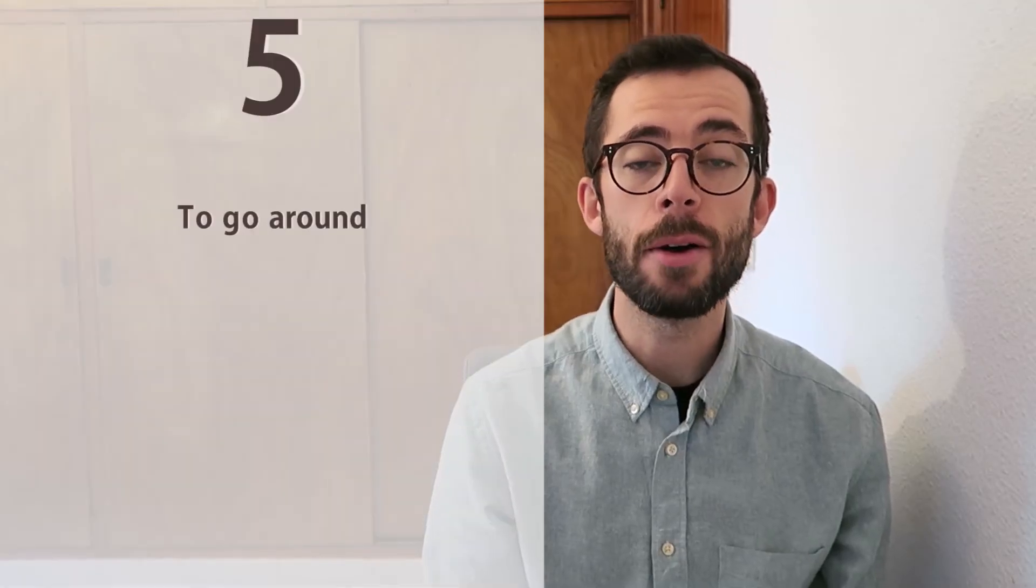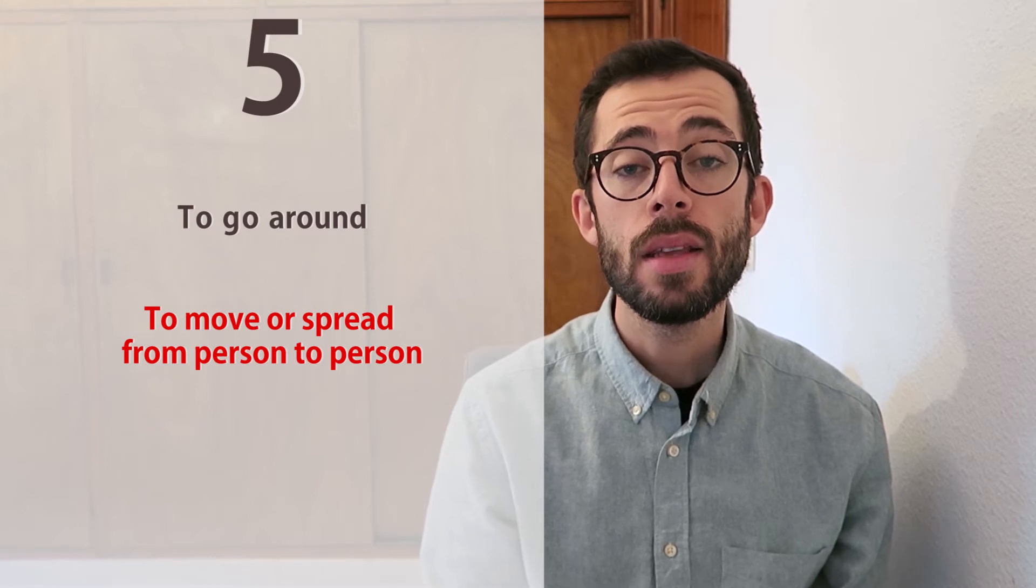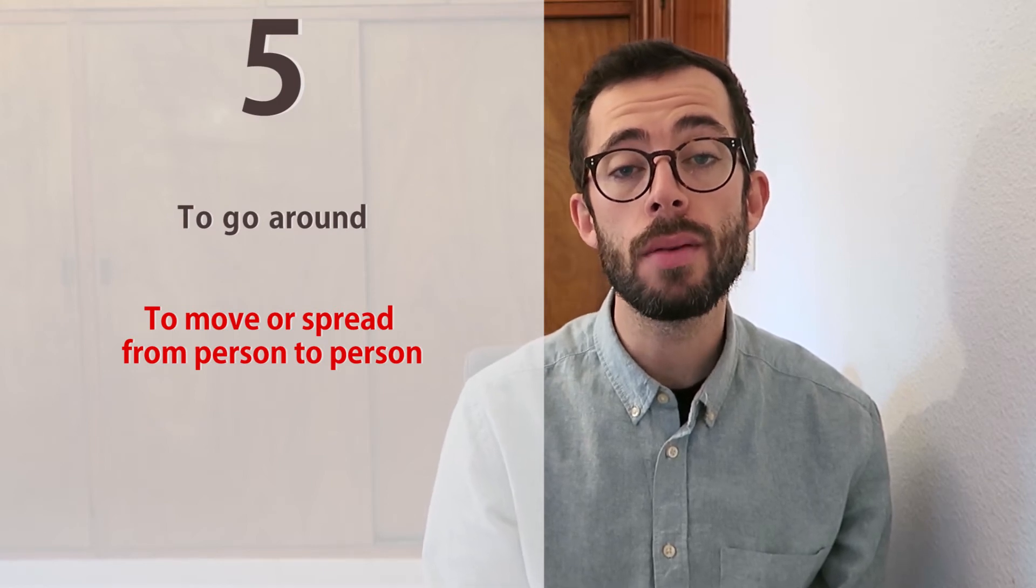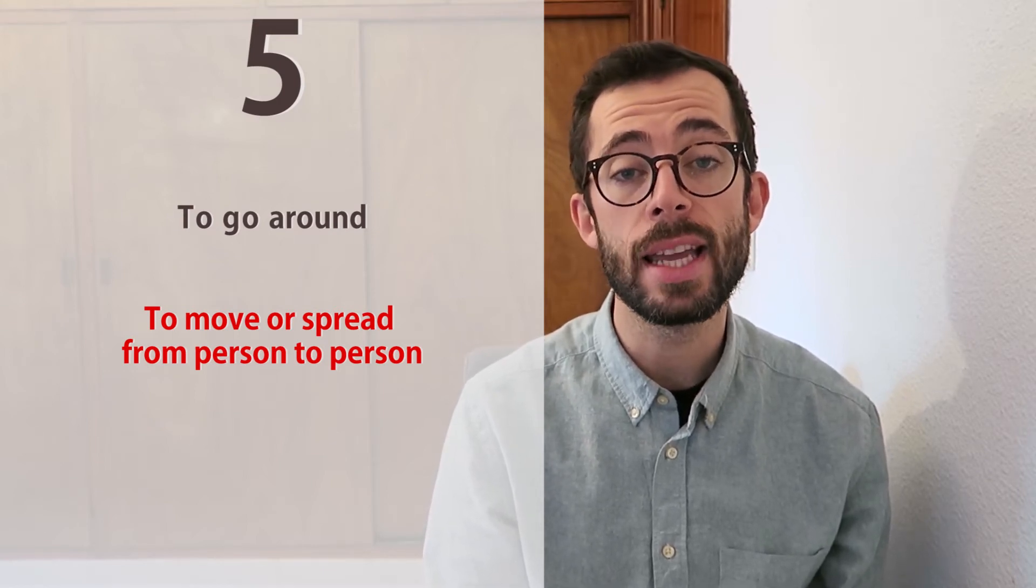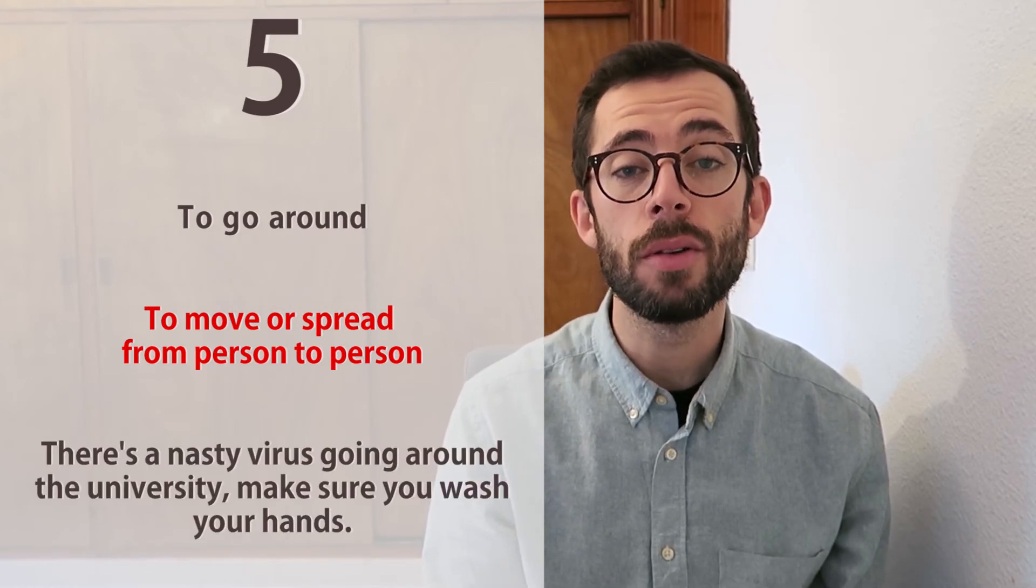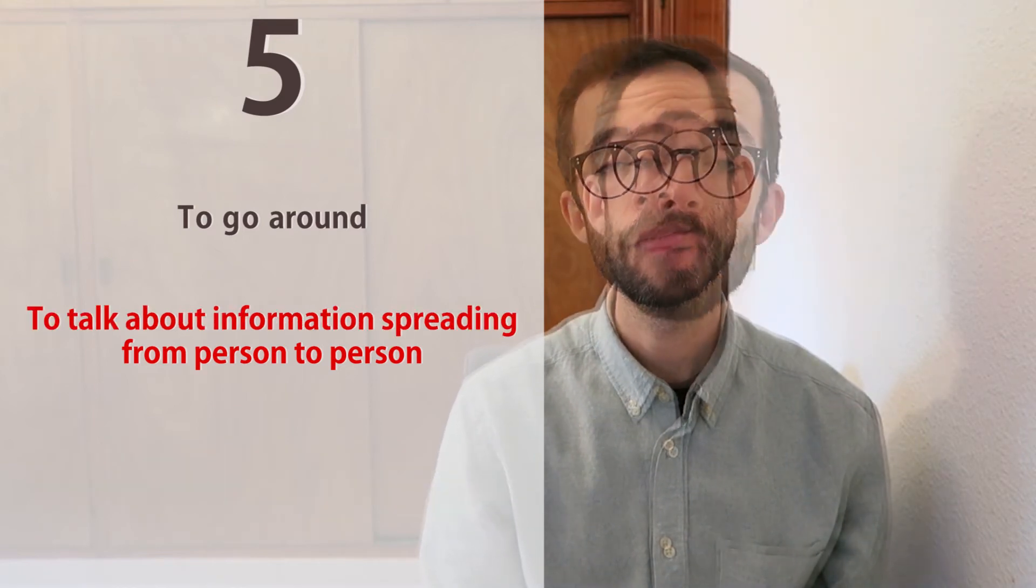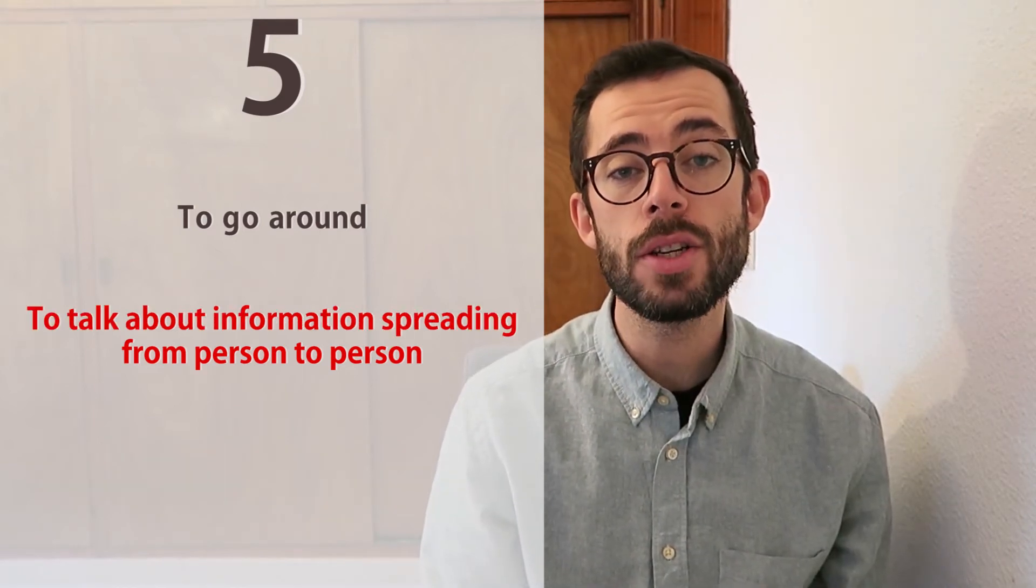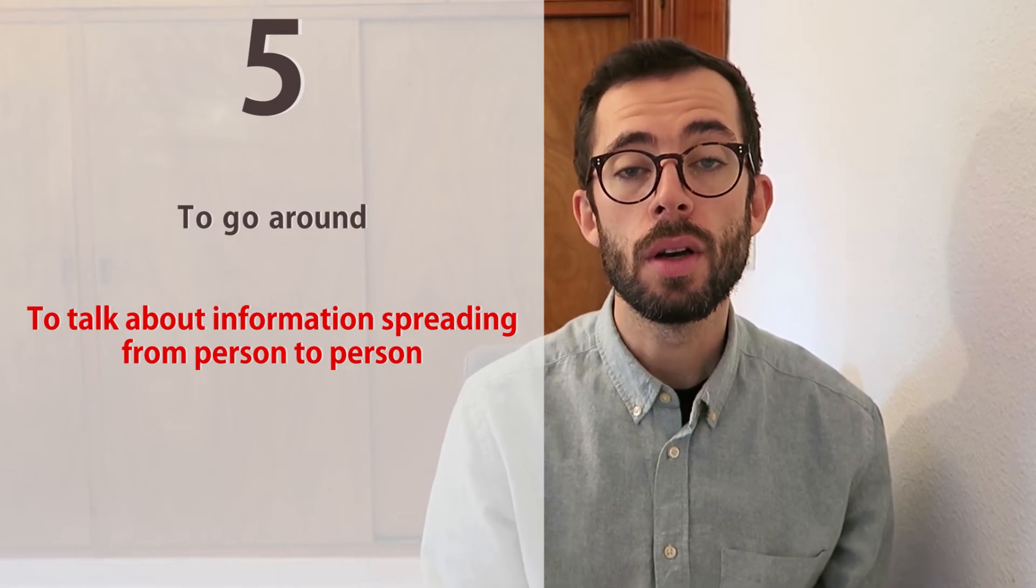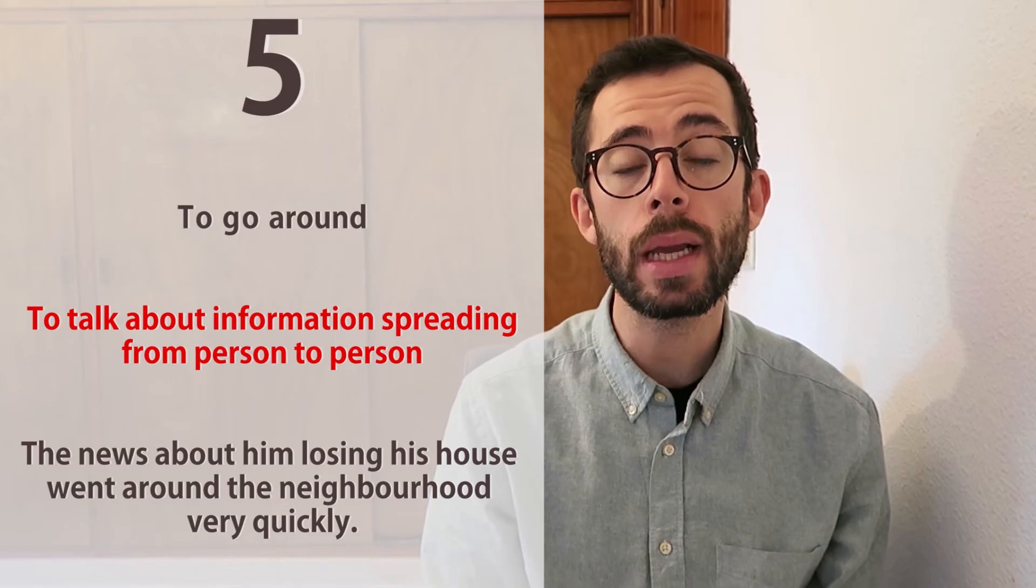Number five is go around, and this means to move or spread from person to person. This is often used with the progressive form of pretense, i.e. the -ing form. For example, there's a nasty virus going around the university, make sure you wash your hands. We can also use this one to talk about information going around from person to person. For example, the news about him losing his house went around the neighborhood very quickly.